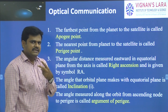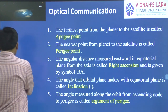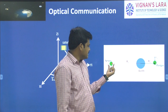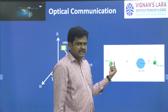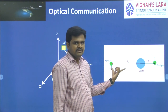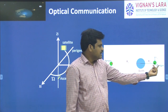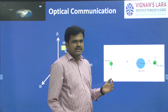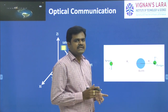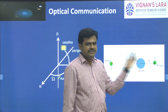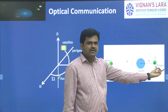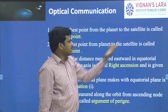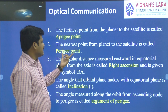Before defining those six quantities, there are two more quantities we need to know — apogee point and perigee point. Apogee point means: if the satellite is placed very far from the earth, that is the farthest point, we call it the apogee point. If the distance between the satellite and the earth is very short — the nearest point — then we call it the perigee point.